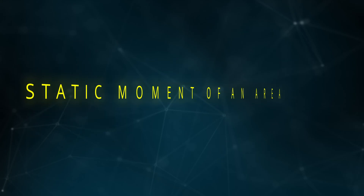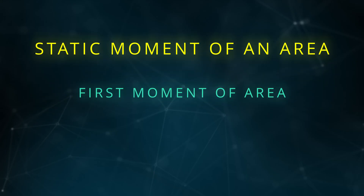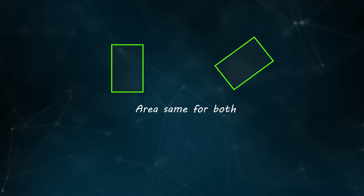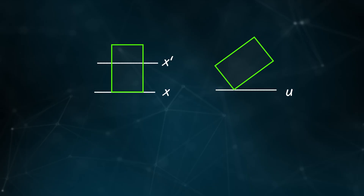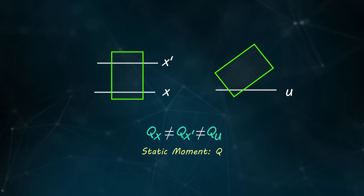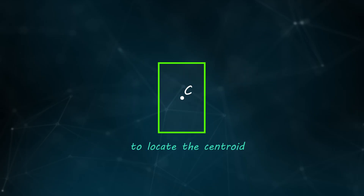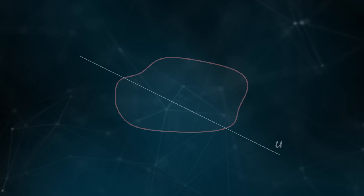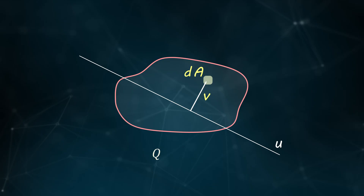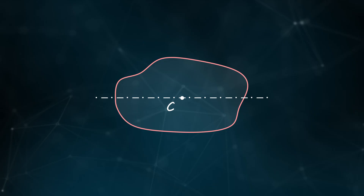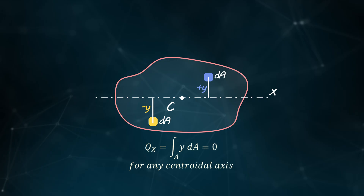Now we introduce the static moment of an area, also called the first moment of area. While the area is invariant and independent of the coordinate system, the static moment depends on the chosen axis and describes how the area is distributed about it. It is used to locate the centroid and to determine how shear stresses are distributed across the cross-section. The static moment equals the sum over the entire section of each infinitesimal area multiplied by its perpendicular distance to the chosen axis. When the axis passes through the centroid, the static moments above and below sum to zero.